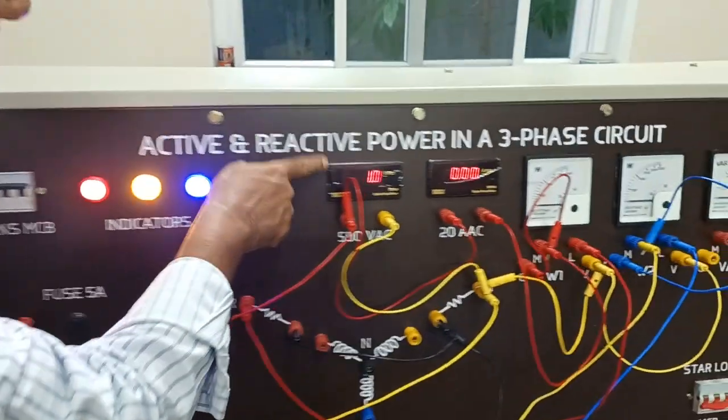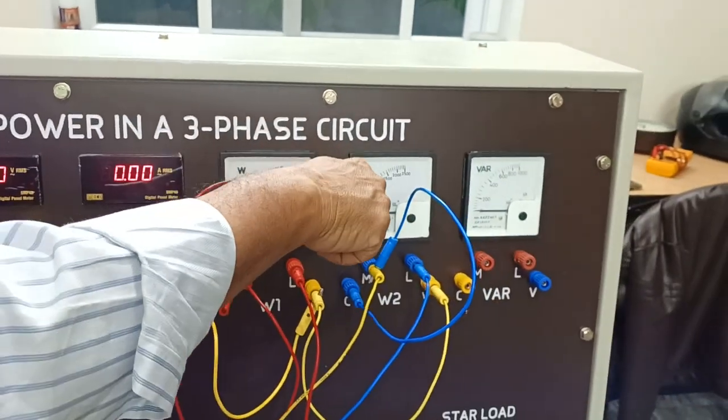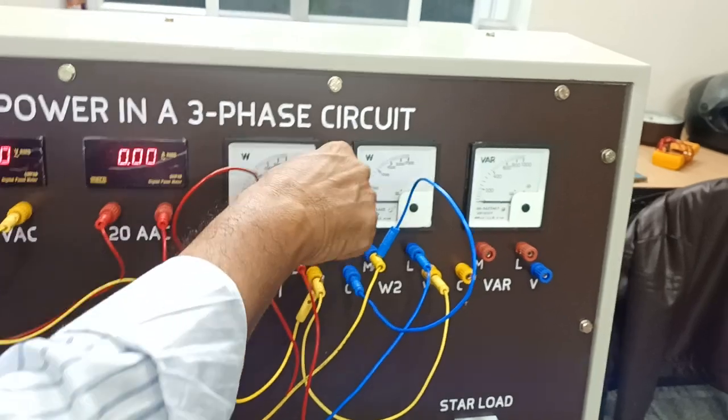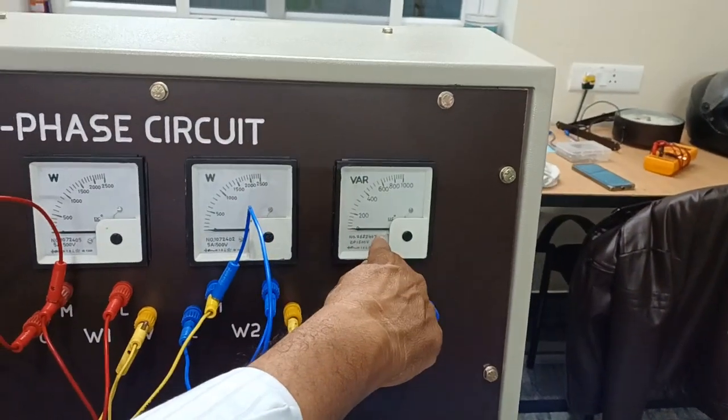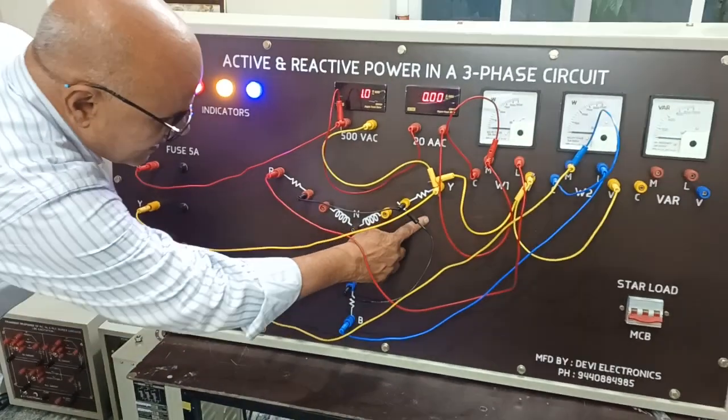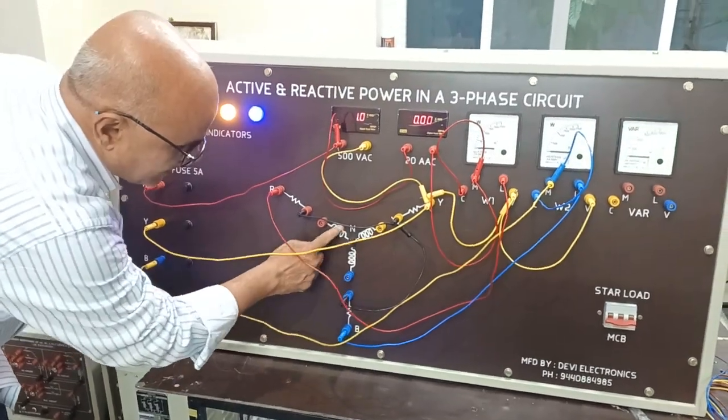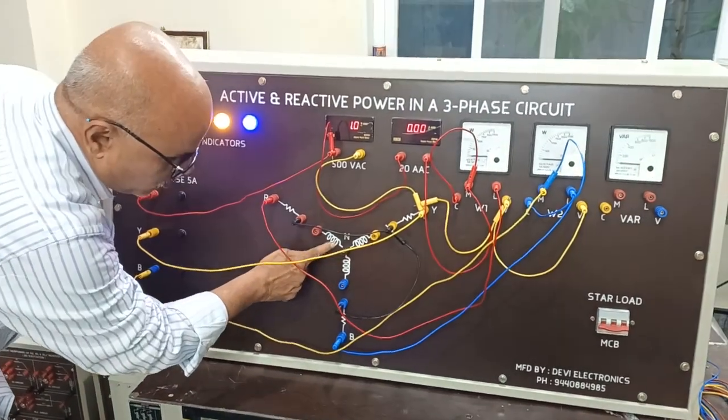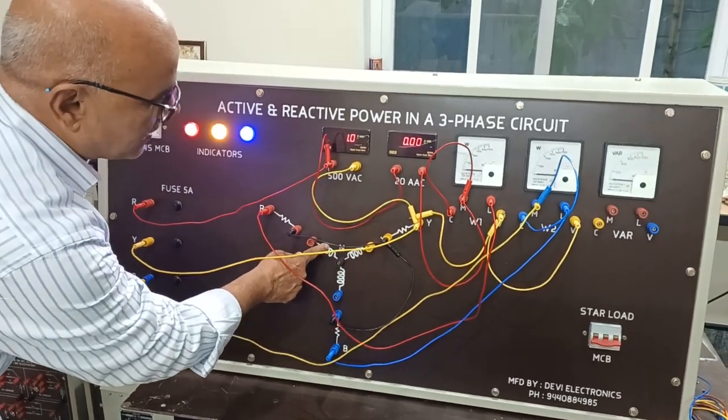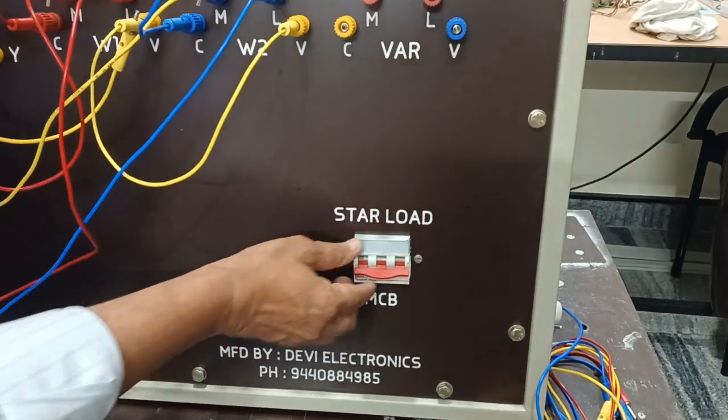We have one voltmeter, one ammeter, and two wattmeters to find out active power. This is a direct wattmeter to find out reactive power. We have three sets of resistors for active power and three sets of inductors or chokes for finding out reactive power. This is the MCB to switch on the load.